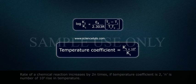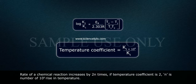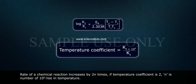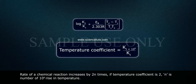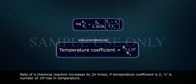Rate of a chemical reaction increases by 2 to the power N times if temperature coefficient is 2, where N is the number of 10 degree rises in temperature.